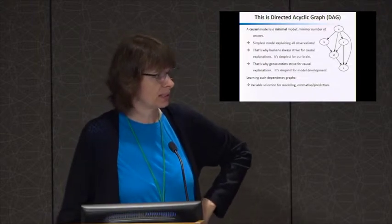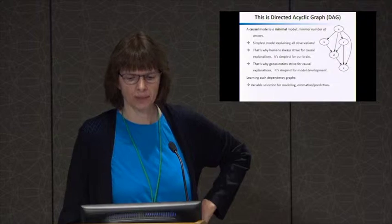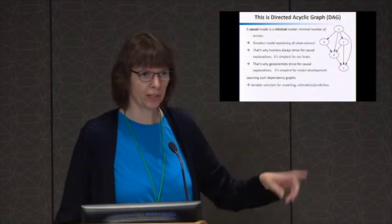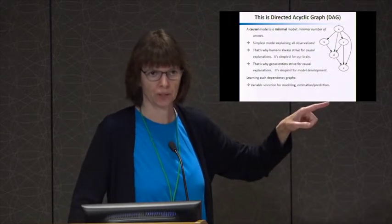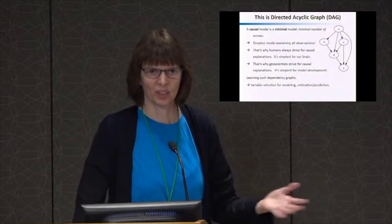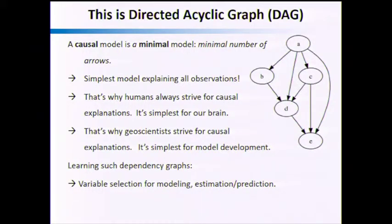If you have a causal model, it's always going to be a minimal model by definition — it has the minimal number of edges. It may not be the only one; there may be several minimal models in a Markov equivalence class, but the causal model is always one of the minimal ones. This is why humans strive for causality — it's the simplest model, with the smallest conditioning sets, and simplest to keep in our minds to match the observations. That's also why geoscience finds causality interesting: it's the simplest model for explanations and simplest to encode. Learning such dependency graphs has been worked on heavily since the 1980s and is computationally feasible these days, with many different methods. That's what's given a lot of the breakthroughs in bioinformatics.